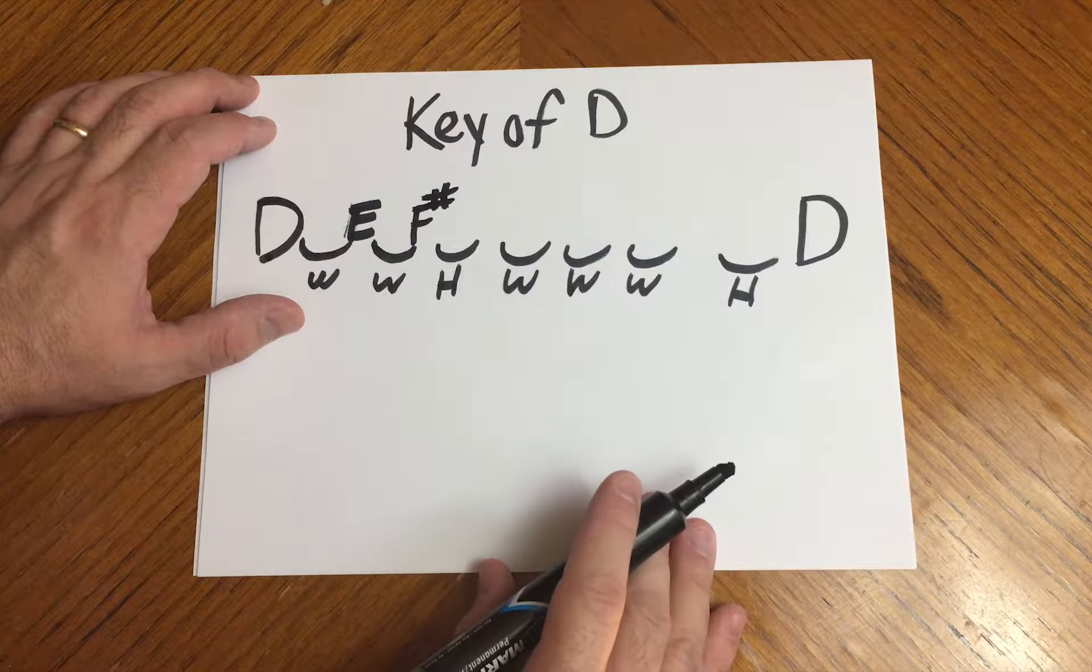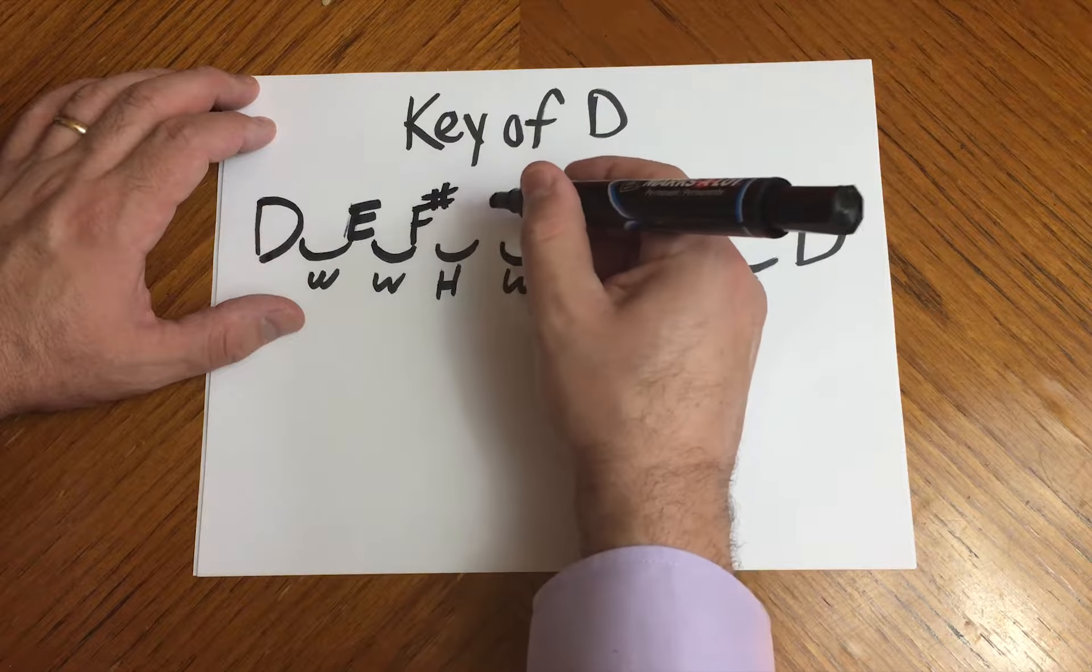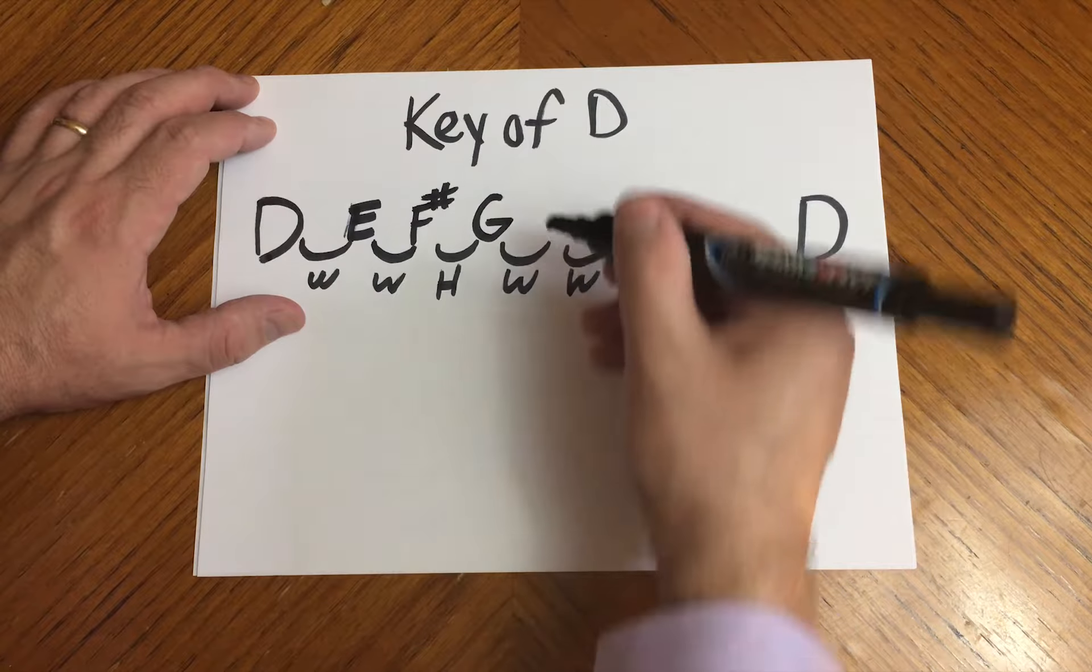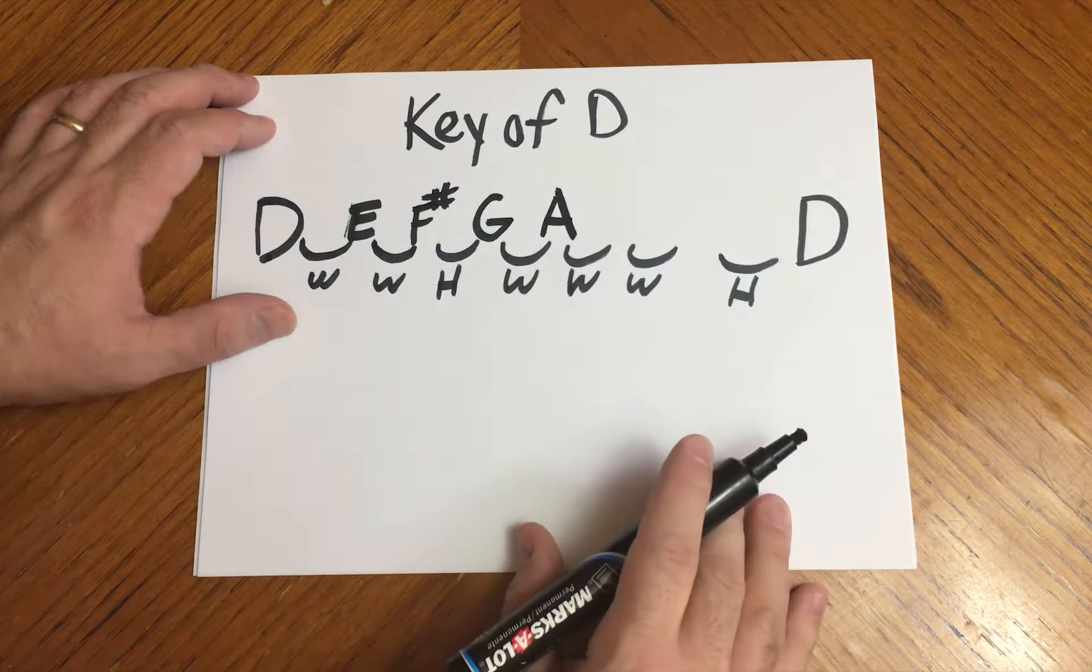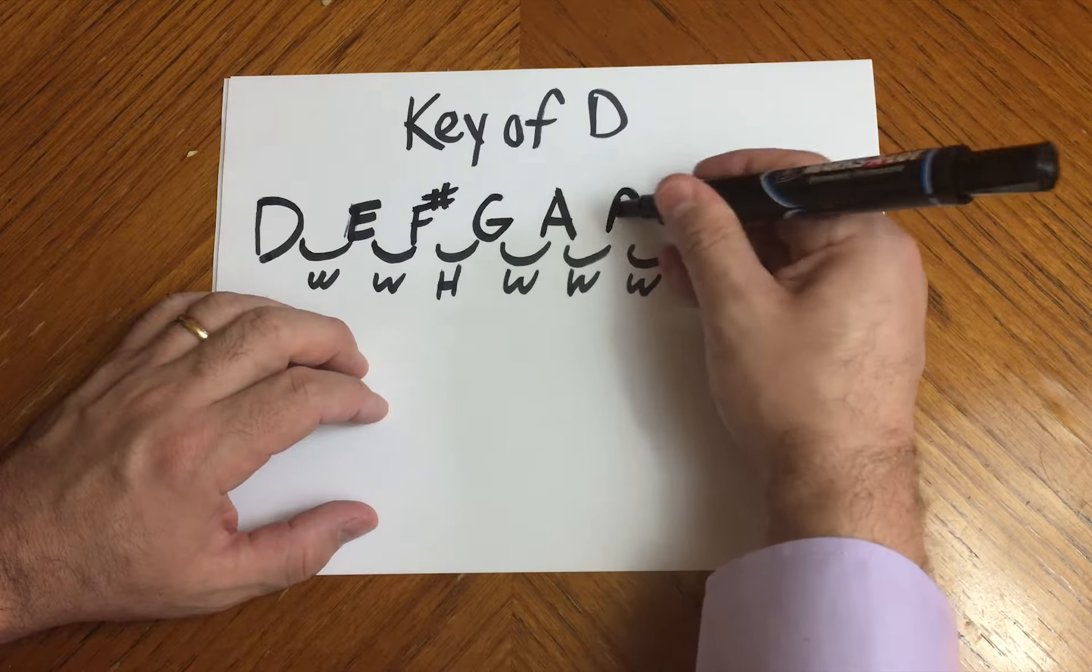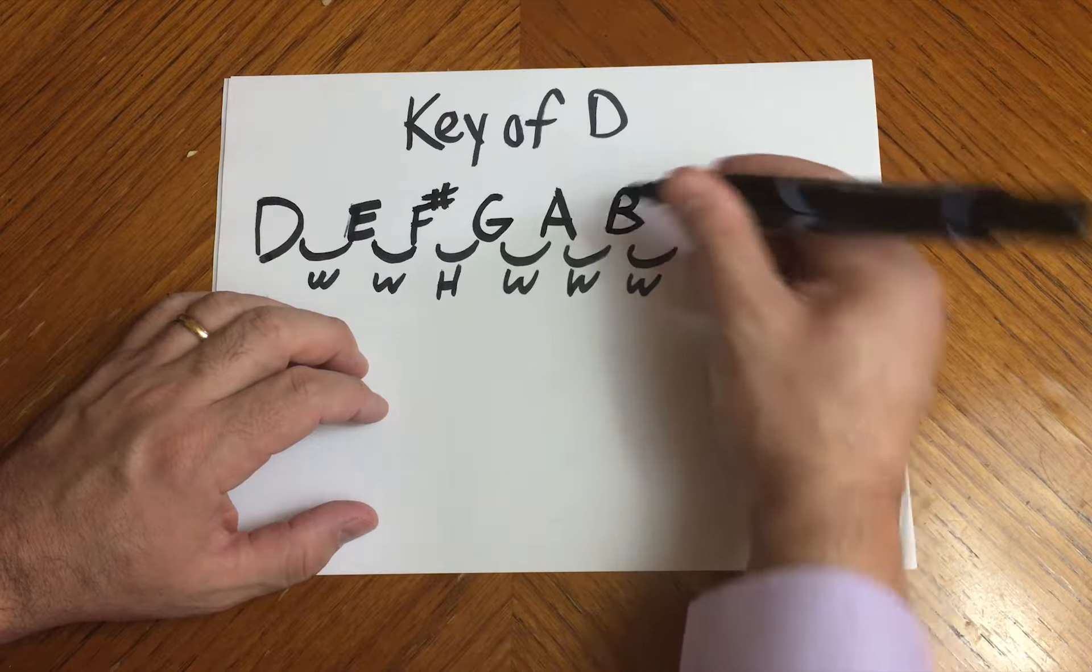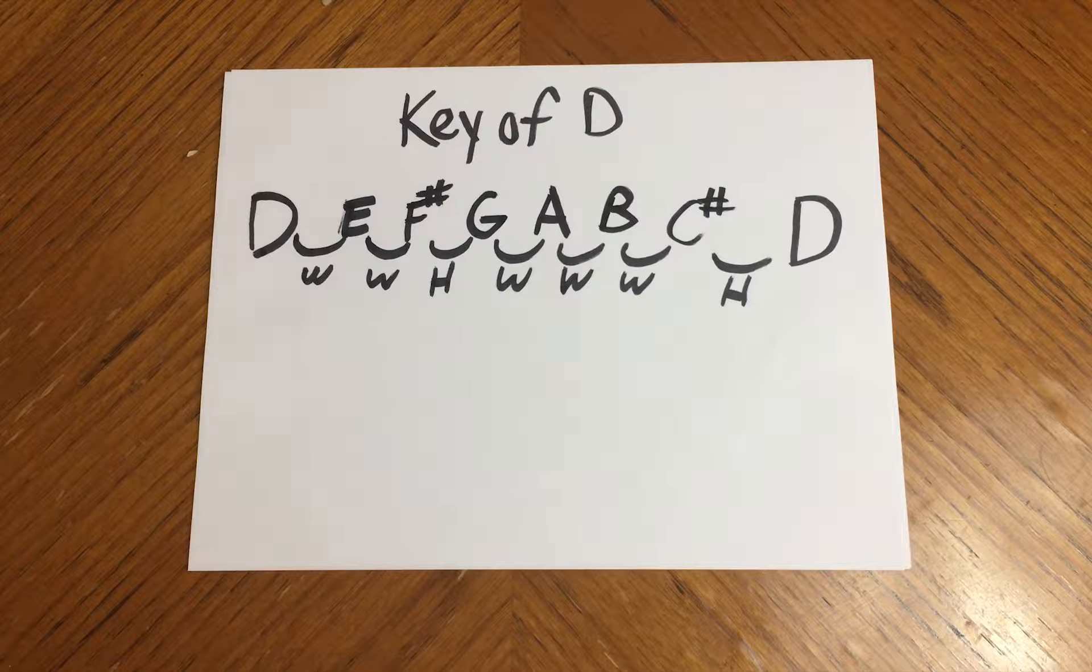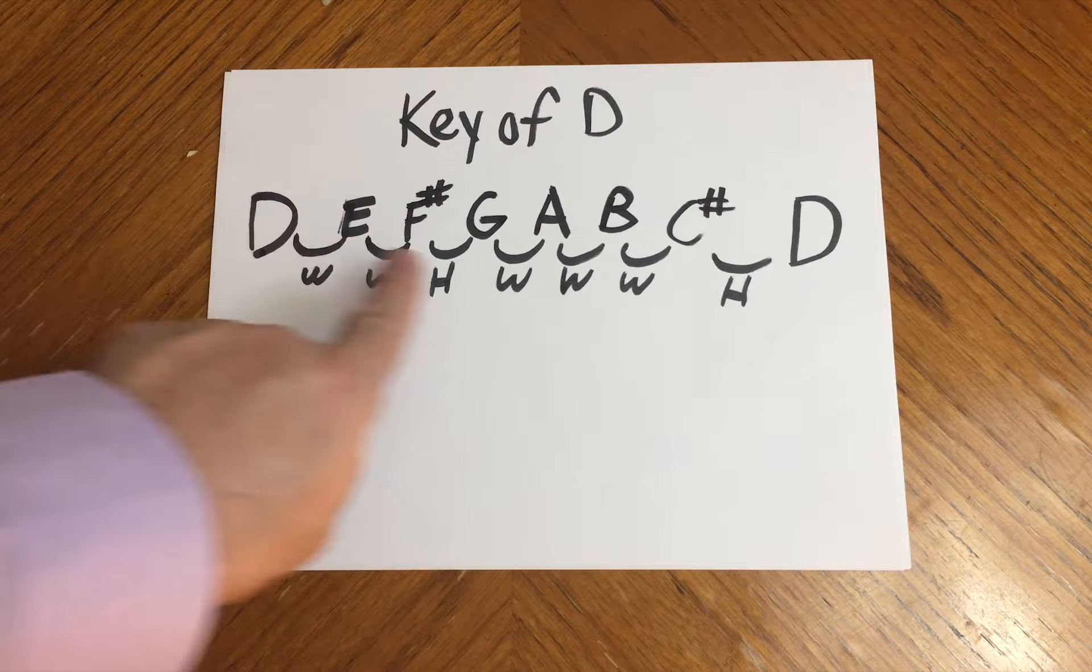F sharp, a half step from F sharp is G. Whole step from G, G sharp A. Whole step gives you D again. So that's how we get the notes.